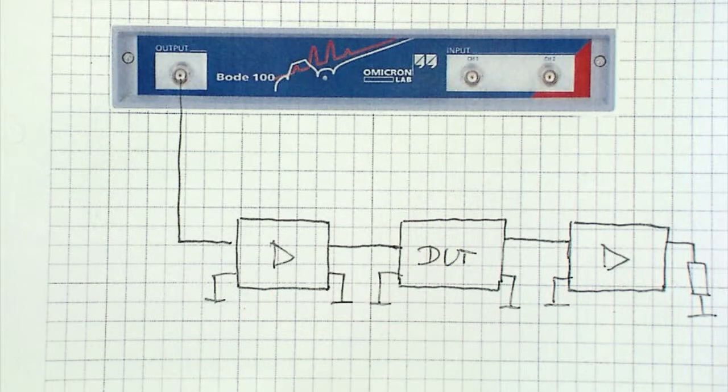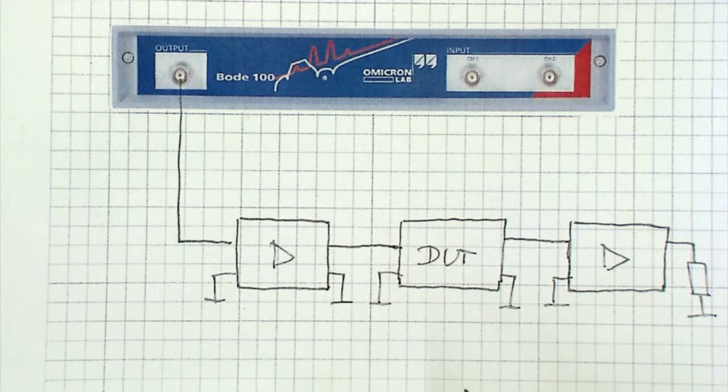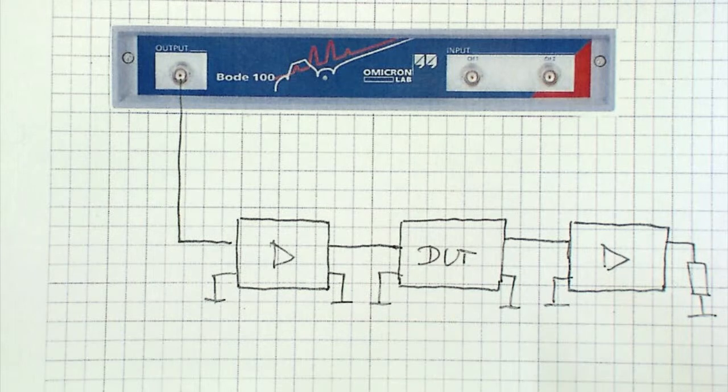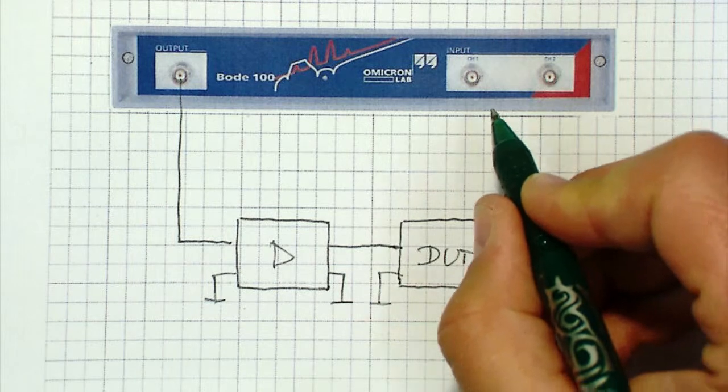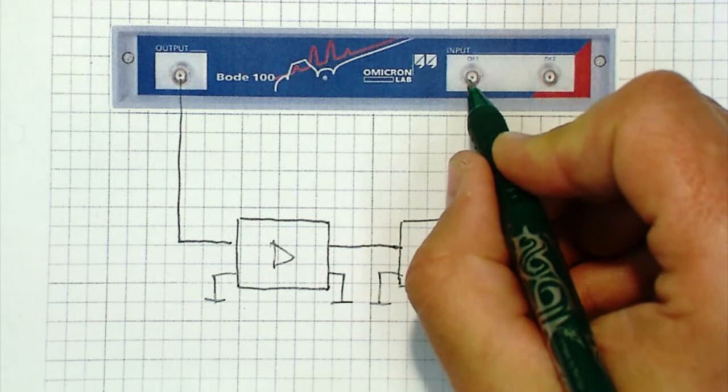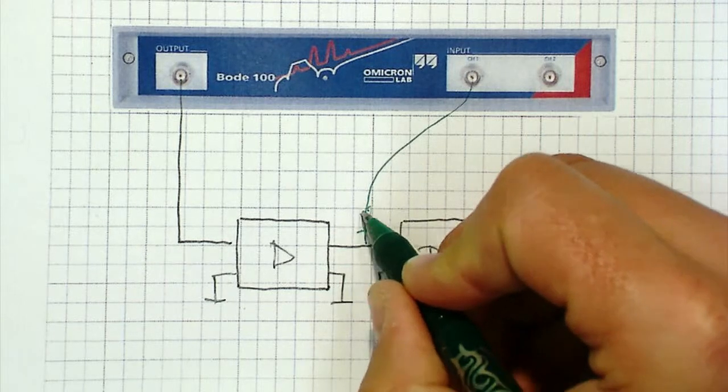If we want to measure the complex transfer function of a device under test where we have no direct access to the input and the output, the complex gain measurement of the Bode 100 in the frequency response analyzer mode becomes especially handy because we can switch both input channels of the Bode 100 to high impedance and then connect oscilloscope probes to pick up the input voltage